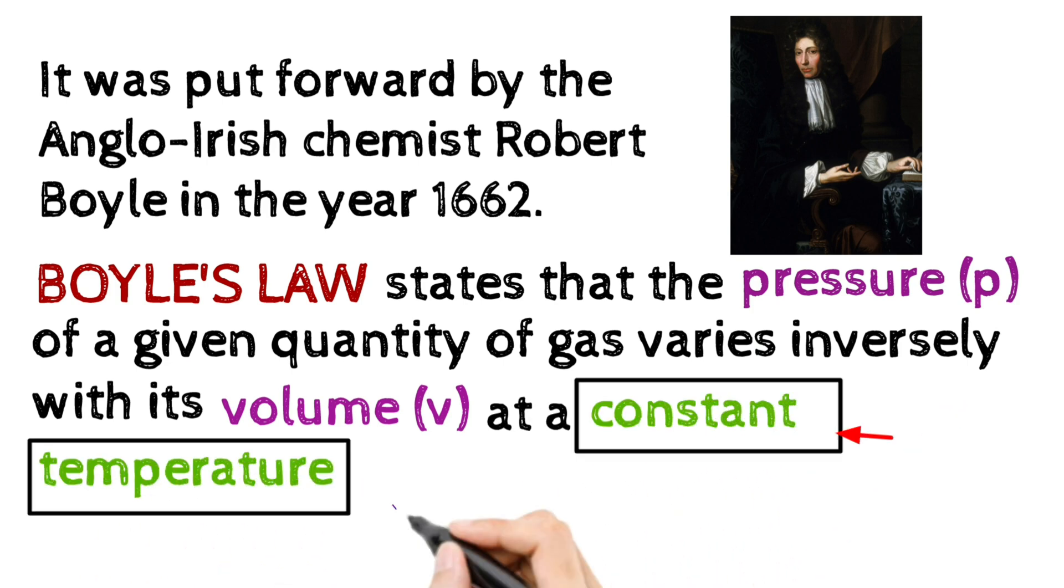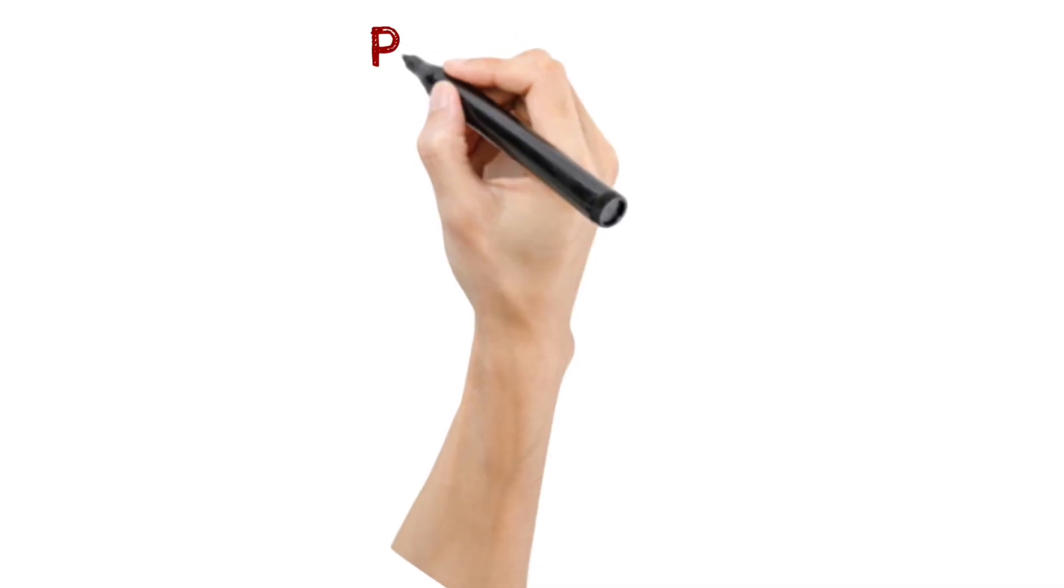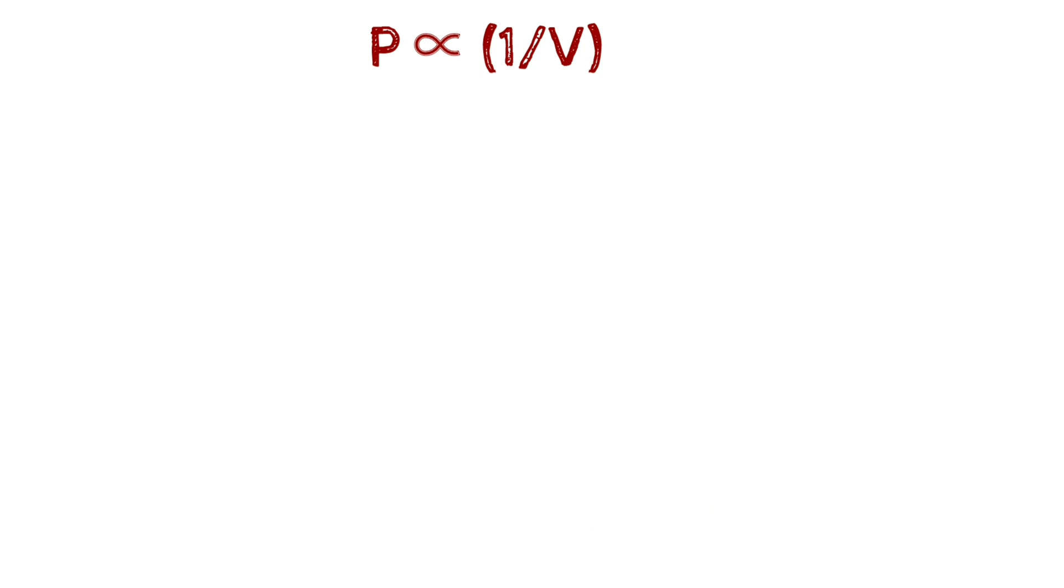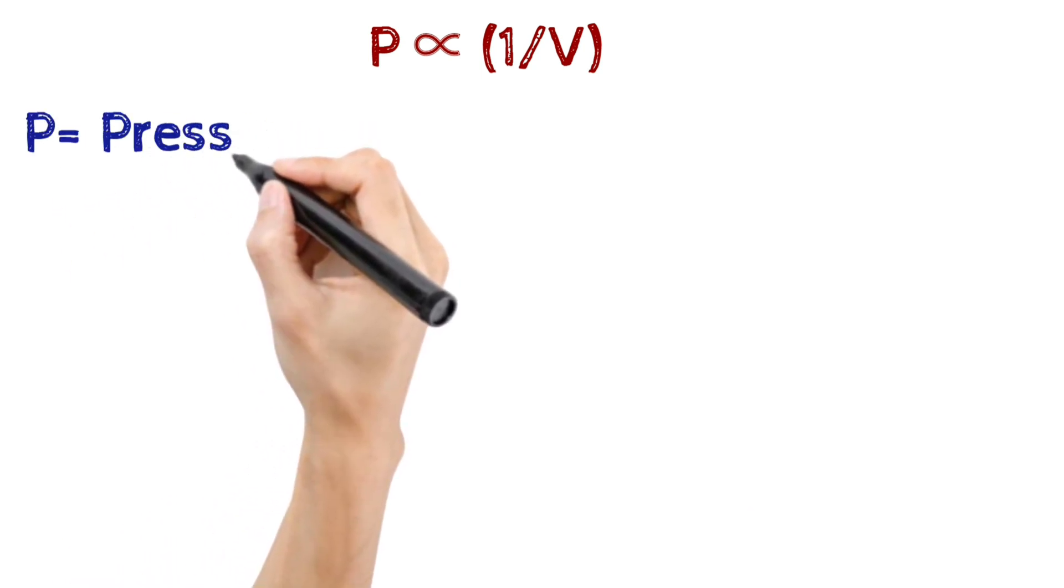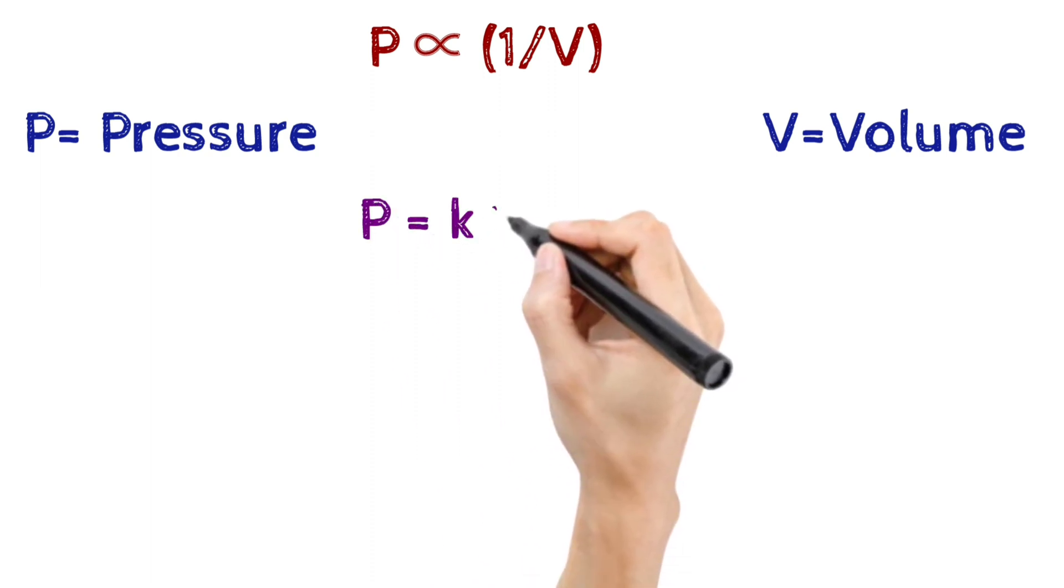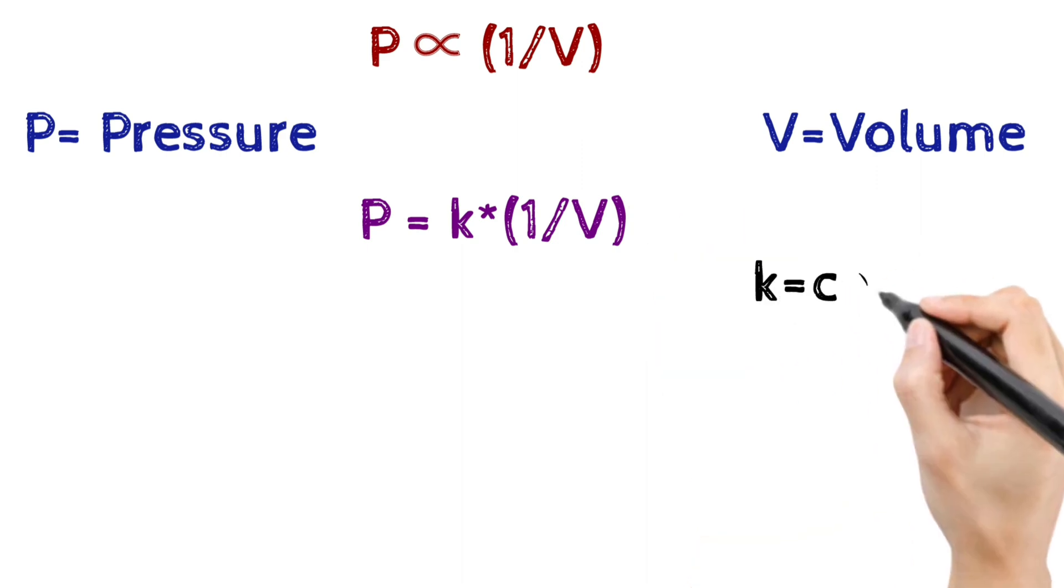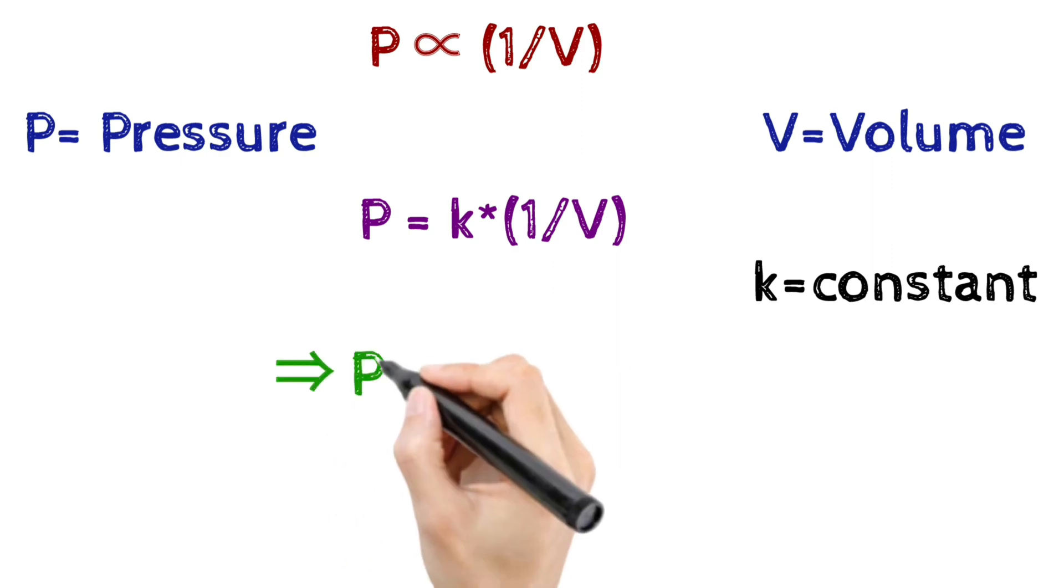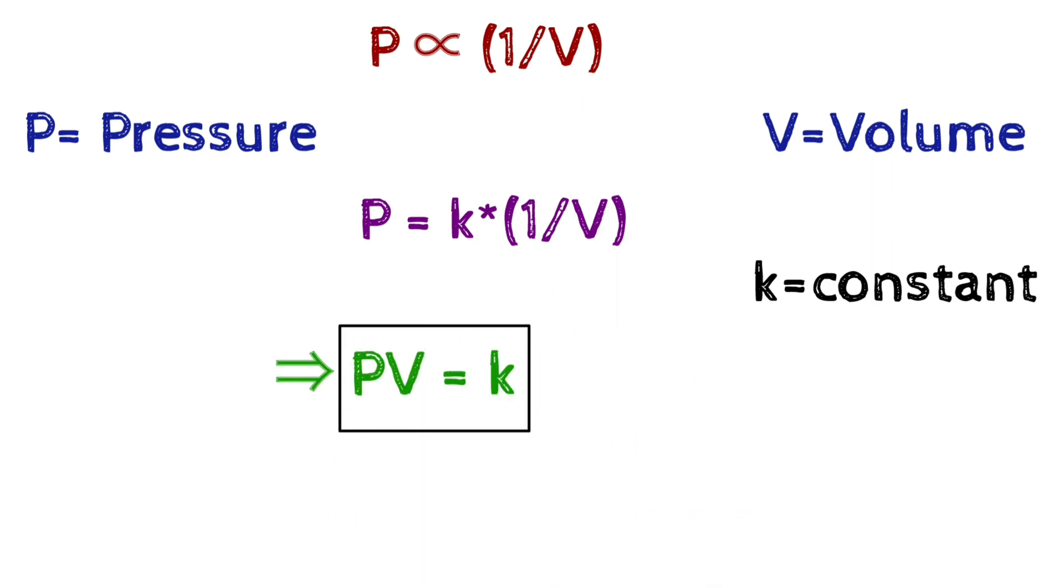We can write from here that P is inversely proportional to V. In this mathematical form, we can say that P denotes the pressure and V denotes the volume of the gas. So from here we can write that P is equals to K multiplied by 1 upon V, where K is the proportional constant. Now if we take V on the other side by cross multiplying, then we can write P multiplied by V is equals to K, which means the product of pressure and volume is always a constant.